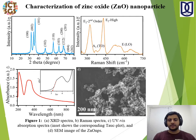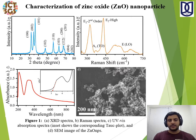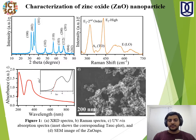Here we can see the characterization of zinc oxide nanoparticles from XRD as well as Raman spectra. In both cases, we obtained a pure wurtzite structure of zinc oxide with all peaks indexed according to the hexagonal phase of zinc oxide. In the optical study shown in figure C, UV-visible spectra were measured and the Tauc plot yielded a bandgap of 3.12 eV. The FE-SEM study in part D shows that very small-size nanoparticles were formed, coagulated but in dispersed form.